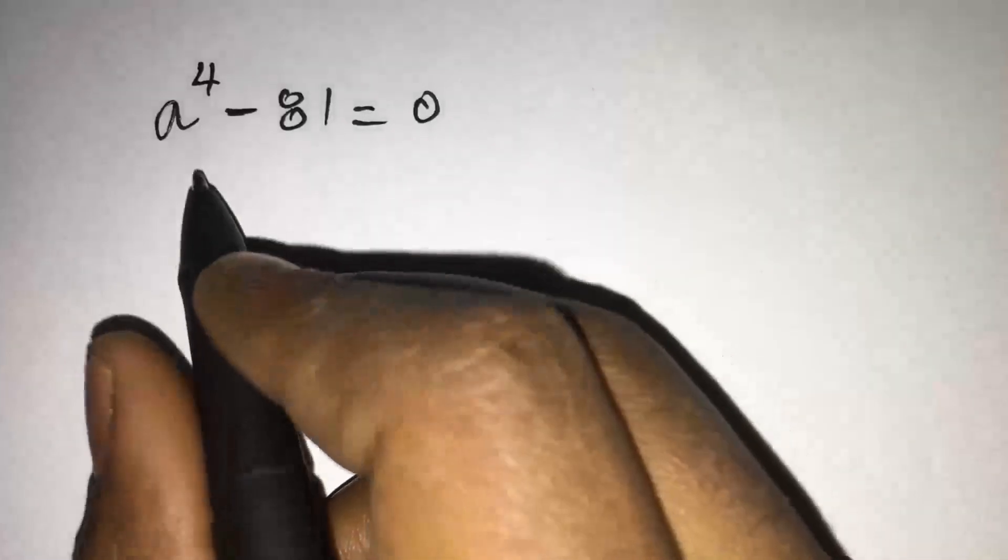A to the power of 4 minus 81 equals 0. How do we solve this equation?